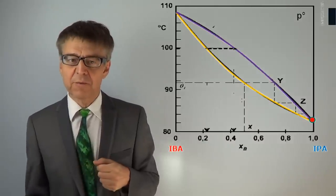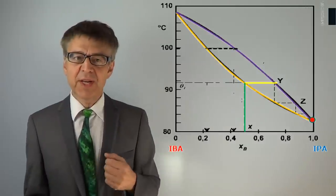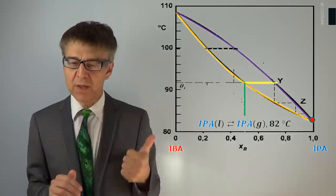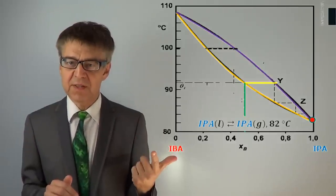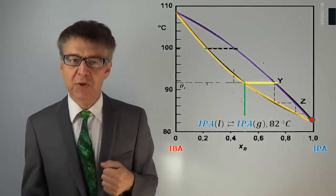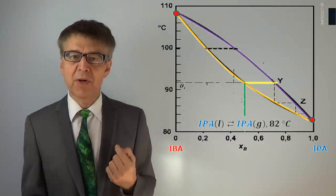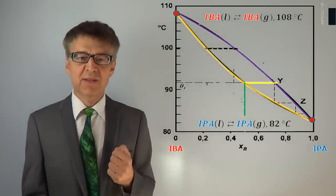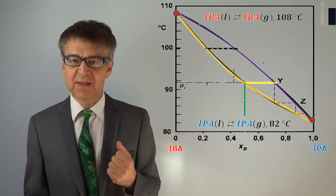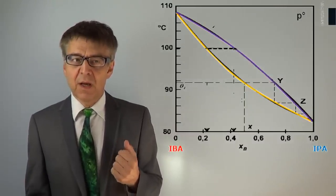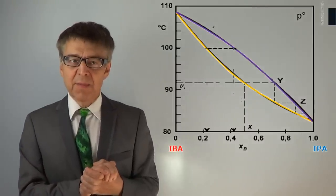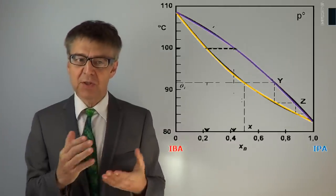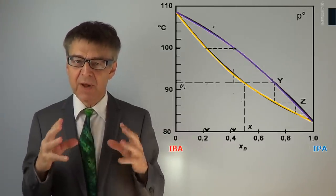Firstly, this is the boiling point of pure IPA. Here, liquid and gaseous IPA coexist at exactly 82 degrees Celsius. We have one component, two phases, and one degree of freedom — that is the pressure. On the other side, we find the boiling point of pure IBA. Here, liquid and gaseous IBA coexist at 108 degrees Celsius. Binodals without any maximum or minimum are typical for phase transitions of ideal mixtures — mixtures of components A and B being chemically very similar.